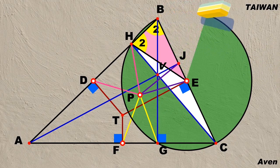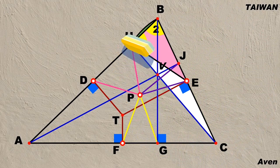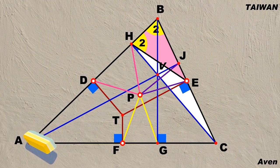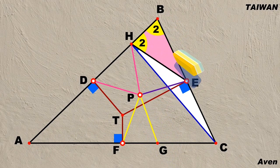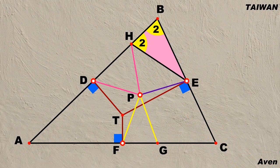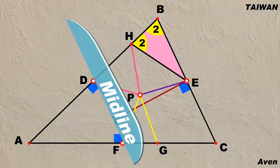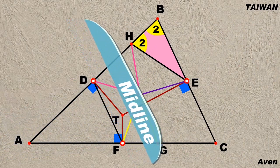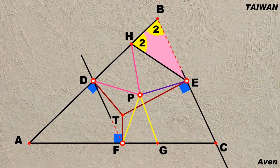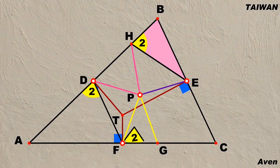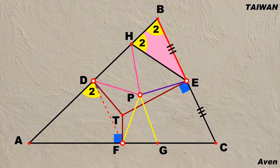Now let's erase the arc of the green circle and the other line segments so that the figure is clear again. Construct the midline DF line segment. Since segment DF is parallel to segment BC and angle 2 is equal to angle ADF, DF is equal to EC, and equal to BE, and equal to HE.